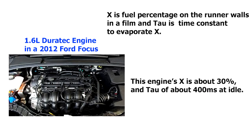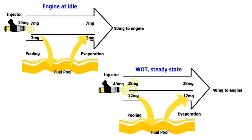Dr. Cowart found that on Ford Duratec engines x was about 30% and the time constant was about 400 milliseconds at idle. So if an engine takes 10 milligrams of fuel at idle, 7 milligrams goes straight into the engine and 3 milligrams ends up wetting the walls. Using that example, and assuming the engine needs 40 milligrams at wide open throttle at idle RPM: at idle in steady state, 3 milligrams goes into the puddle, 7 milligrams goes straight into the engine, and 3 milligrams evaporates from the puddle and gets drawn in — so the cylinder draws in 10 milligrams total and the fuel puddle stays the same size.